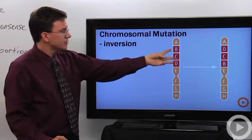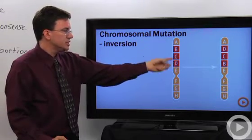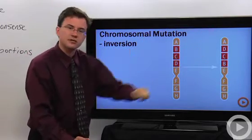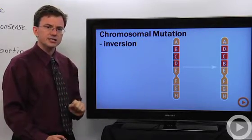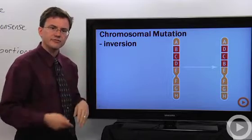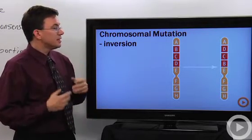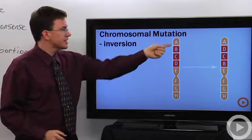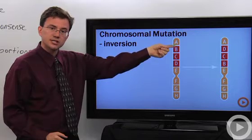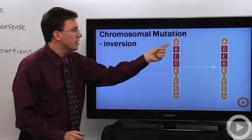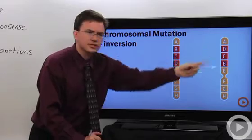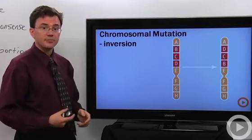Inversion, here I have my three genes and now I've not lost any DNA but instead I flipped it around. So again this can cause some problems during the pairing up that happens during the first step of meiosis, but it can also have some effects if say there's a regulatory sequence of DNA right here. Now it's supposed to be controlling B but now it's controlling D. So weird things can happen in the cell.